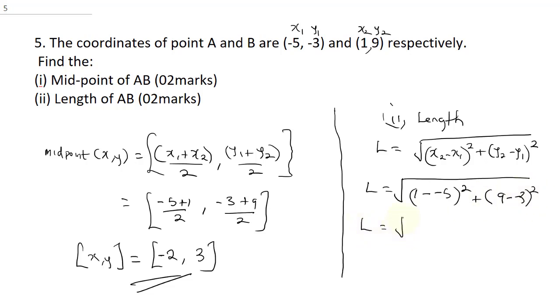So, our length is going to be square root of, now this is going to be 1 plus 5, that's 6, 6 squared, that's 36 plus, now this is going to be 9 plus 3, that's 12, 12 squared, it's going to give us 144.